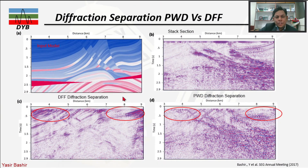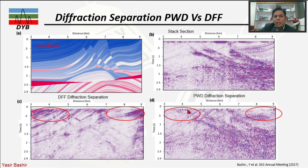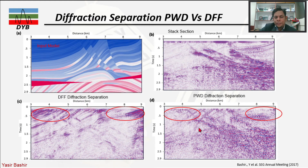Another model used to test diffraction separation is the Marmousi model. Looking at the input model, zero-offset stack section, DFF frequency filtering, and PWD diffraction separation: DFF preserved some horizontal reflection energy in the dataset, whereas PWD accurately removed all reflection energy from the data and preserved only the diffractions.